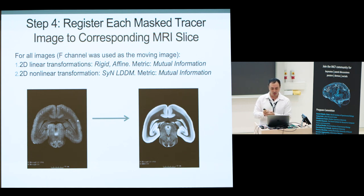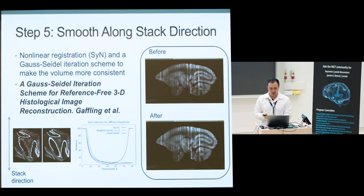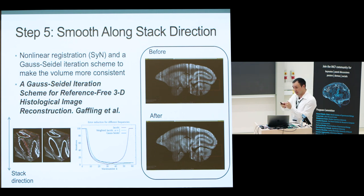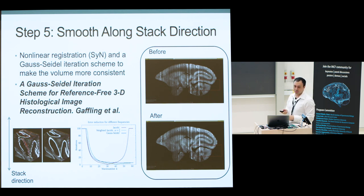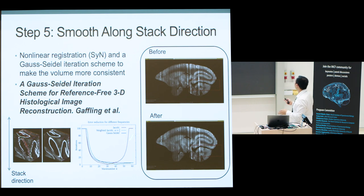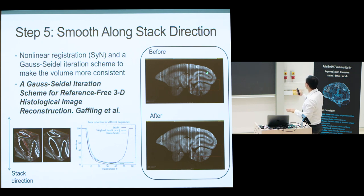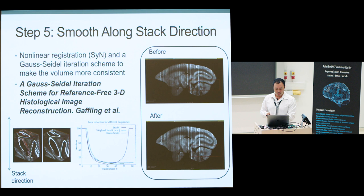Once you've done that, you can recover the brain shape. Since there's no inter-slice consistency in the reconstruction, you can use this approach which removes high-frequency distortions in the registration, effectively aligning and reconstructing the full brain shape in a more reliable manner. If you look at the cerebellum, you get a smoother reconstruction.